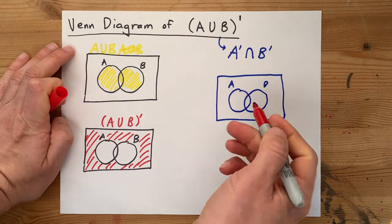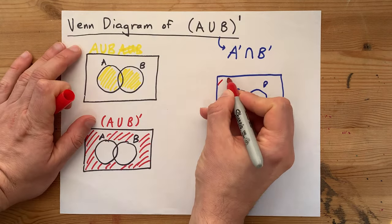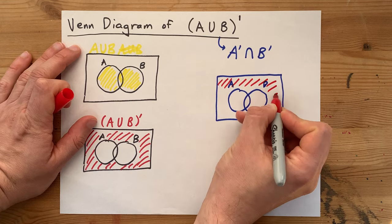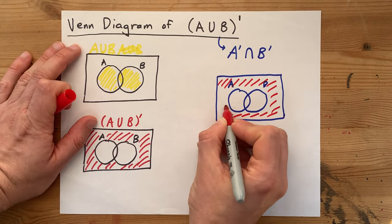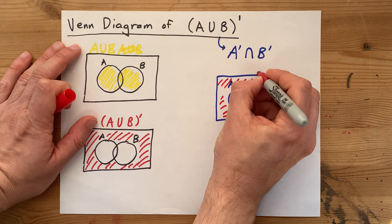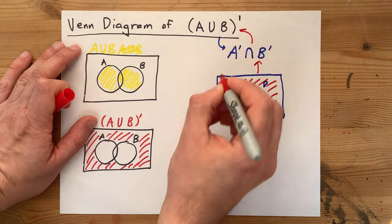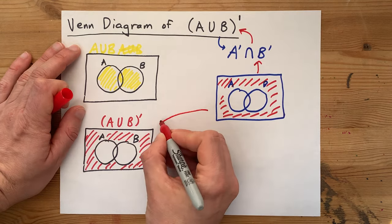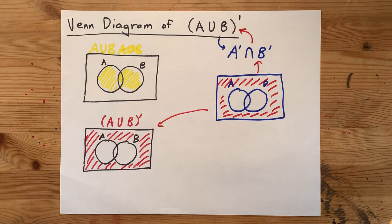The only area that actually isn't in either A or B is this outer area. Oh, look, it's the same as what we asked for originally, and it's the same as this diagram we came up with on our own.